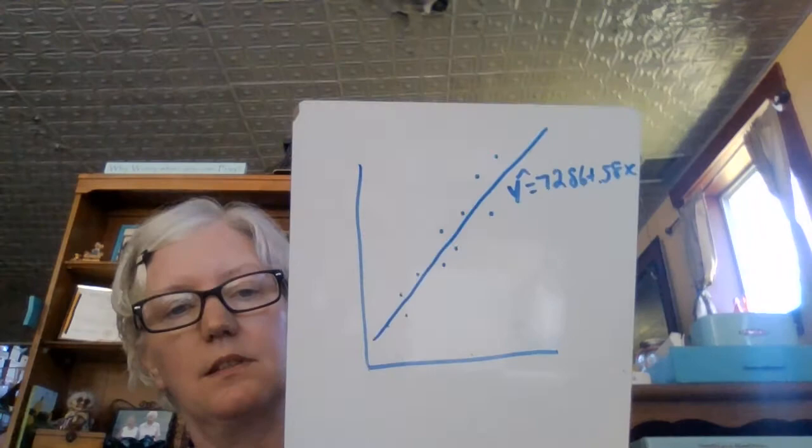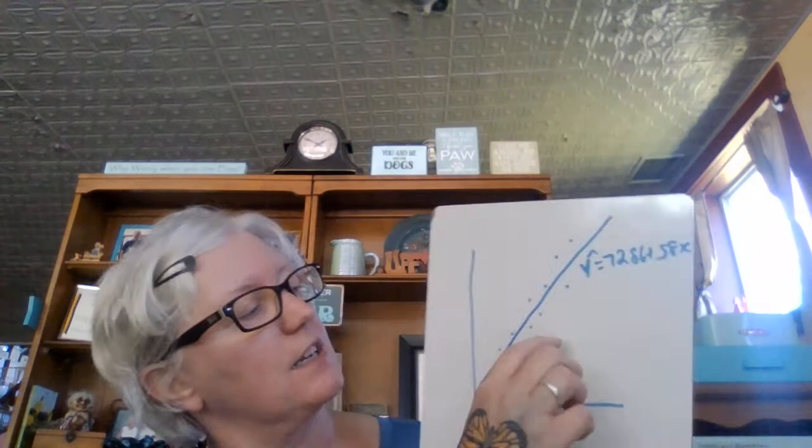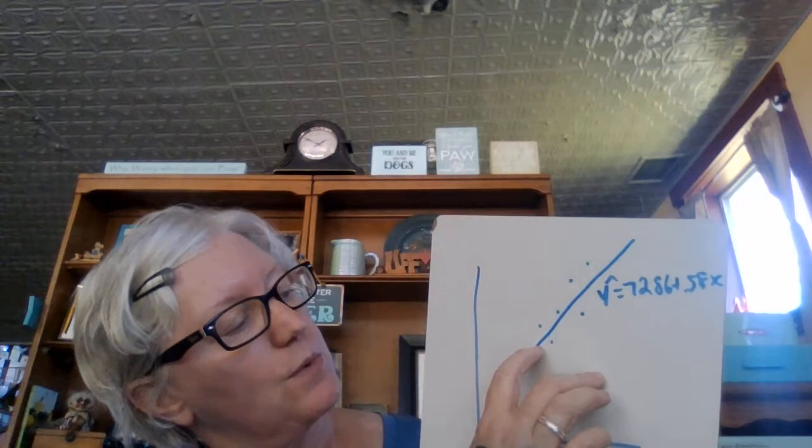Let me draw a graph to explain what the residual means visually. Here's my graph — the weights of the bears and their age, with my line of best fit. The equation is 72.86 plus 0.58x. What the residual is doing is measuring the difference between the actual observed data point and what's on the line, which is the predicted. You do that by measuring these vertical distances.